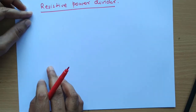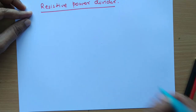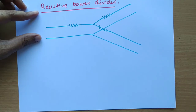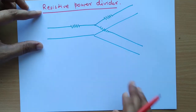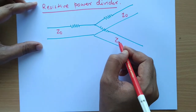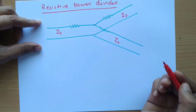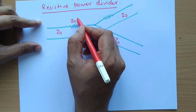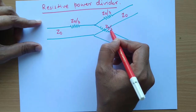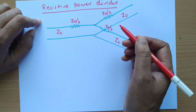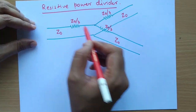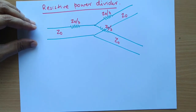In the resistive power divider, all the characteristic impedances are taken as Z0. An additional Z0/3 resistor is connected in series at all three ports. This is done so that all ports will be matched.